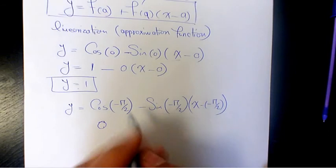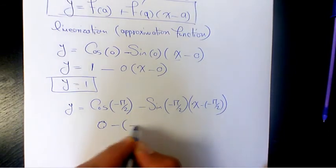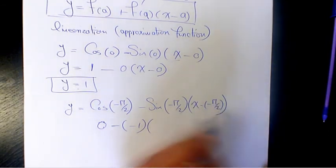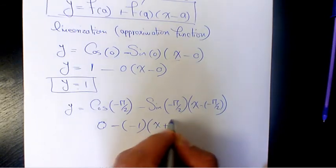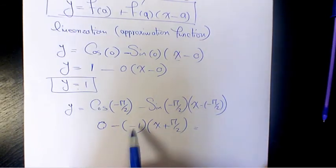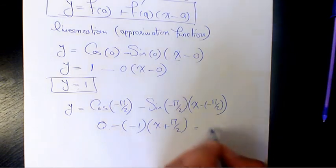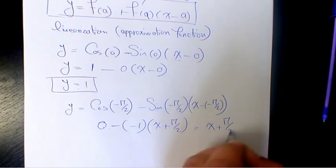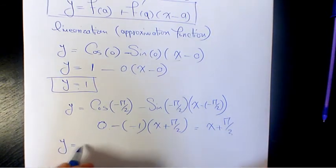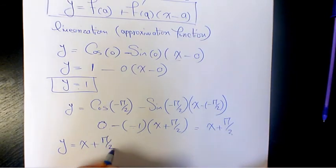So minus negative 1 times x minus negative pi over 2, which is going to be x plus pi over 2. Negative 1 and negative cancels out and we have x plus pi over 2. So we have y equals to x plus pi over 2.